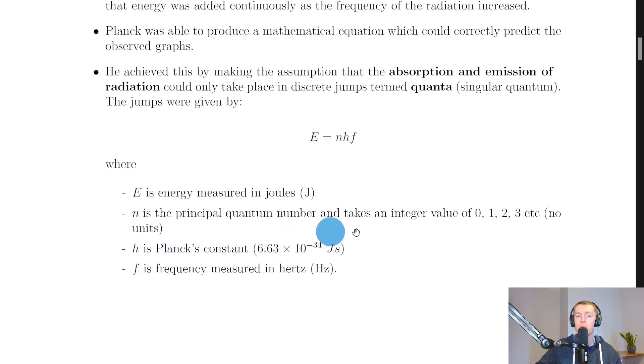Where E is the energy measured in joules, n is known as the principal quantum number and takes an integer value of 0, 1, 2, 3, etc., h is Planck's constant which has a value of 6.63 times 10 to the minus 34 joules seconds, and f is the frequency of the radiation measured in hertz.